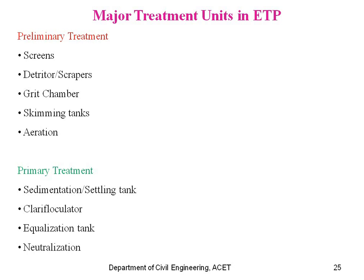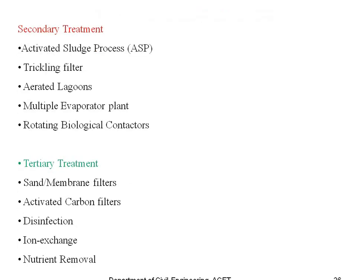From primary treatment, the water goes to secondary treatment with sedimentation and settlement tanks where the water settles. Sand sedimentation is done, then a clarifloculator is used — coagulant is added, flocs are formed, and colloidal particles settle down. Then equalizer tanks and neutralization tanks make the water free from all odors and smell.